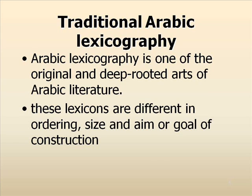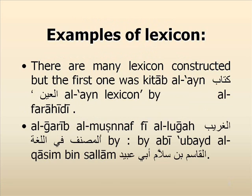There is an introduction to Traditional Arabic Lexicography. Arabic Lexicography is one of the original and deep-rooted arts of Arabic literature. These lexicons differ in ordering, size, and aim of construction. Examples of lexicons include the first one, Kitab al-Ain by al-Frahidi, and al-Gharib al-Musana fi al-Luqa by Abi Ubaid al-Qasim ibn Sallam.